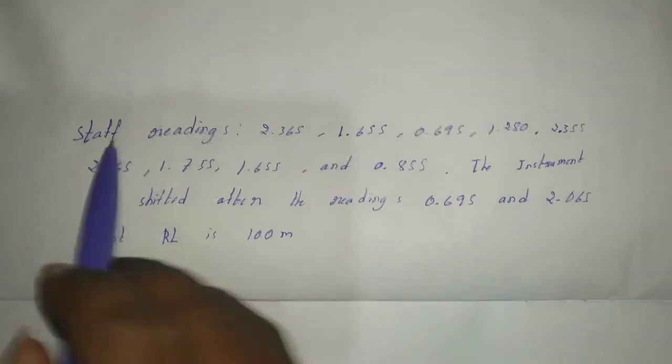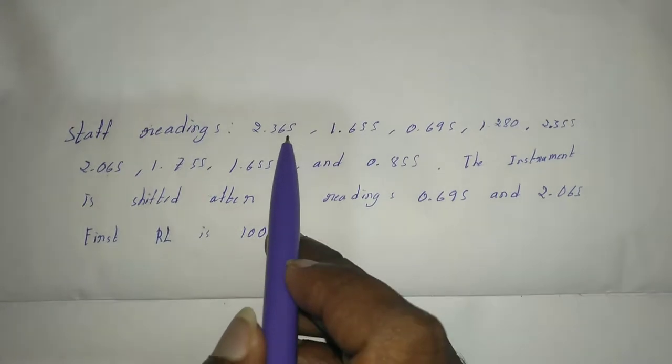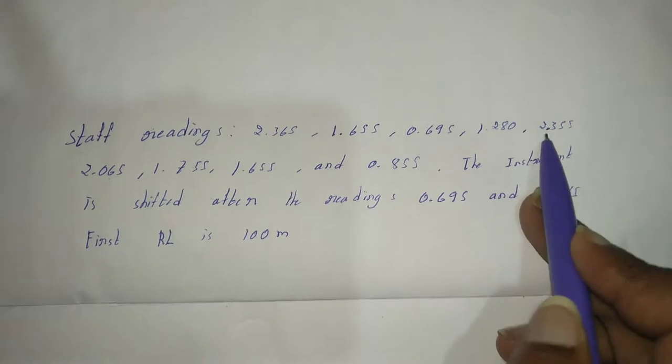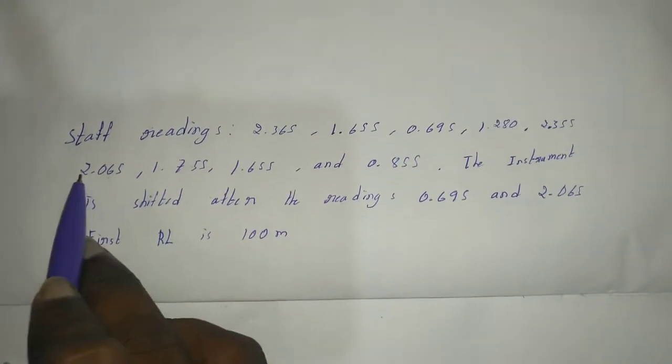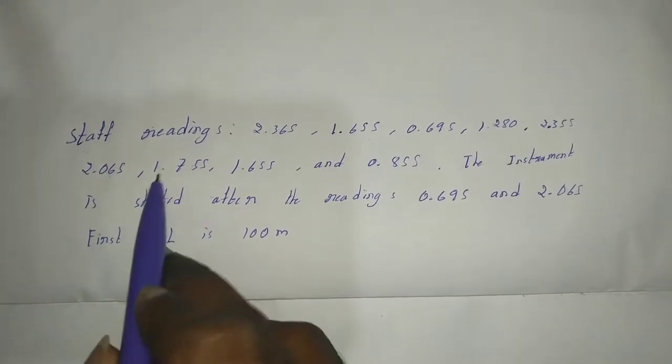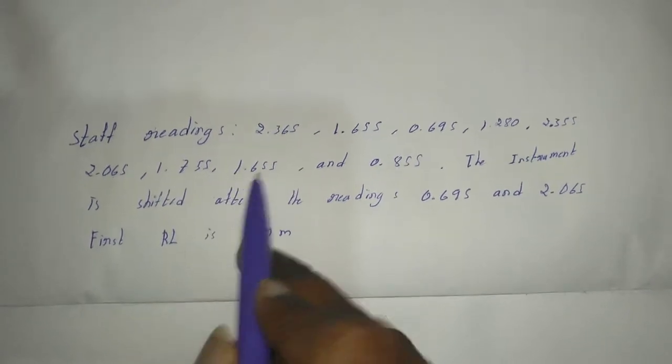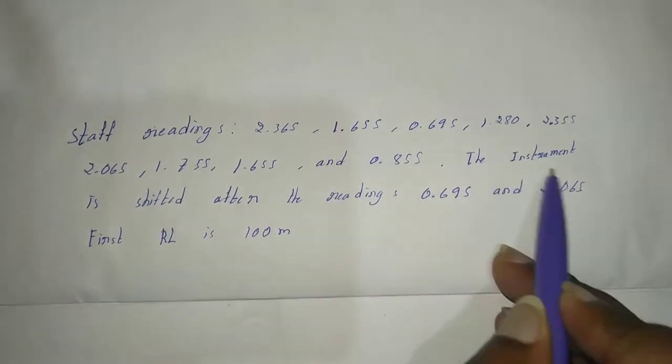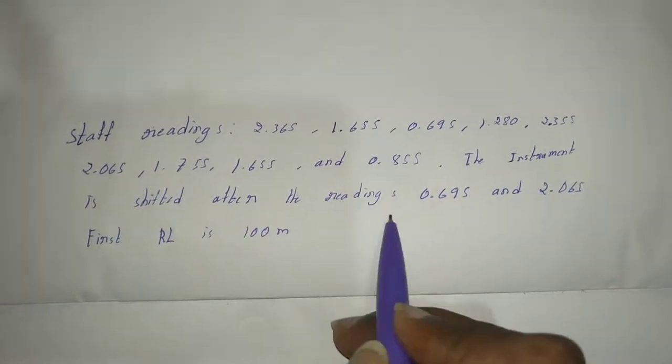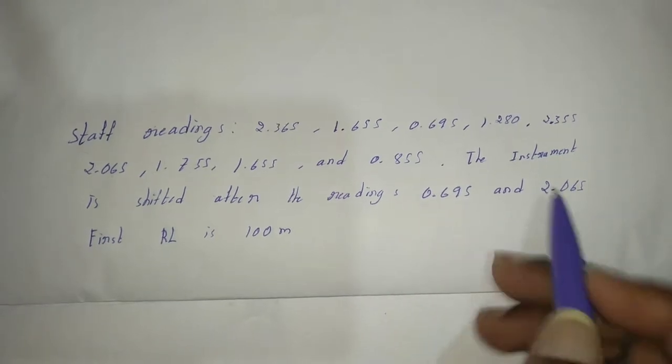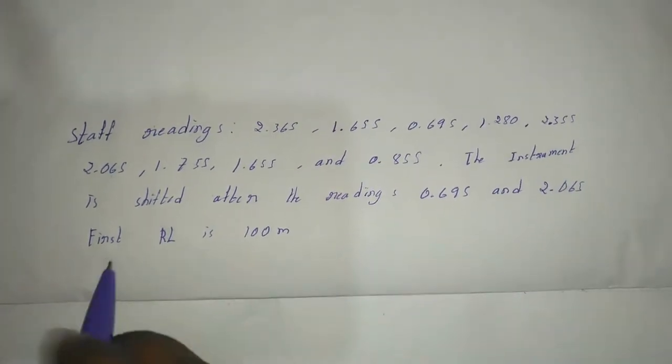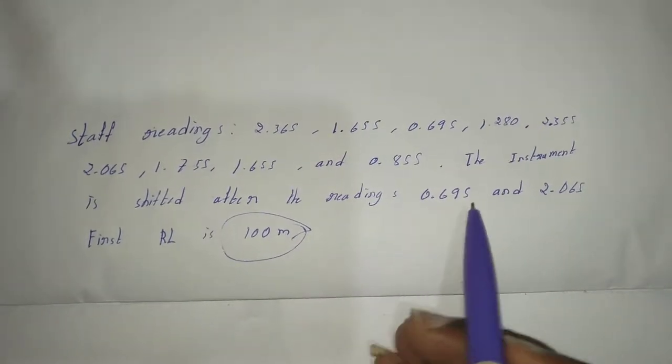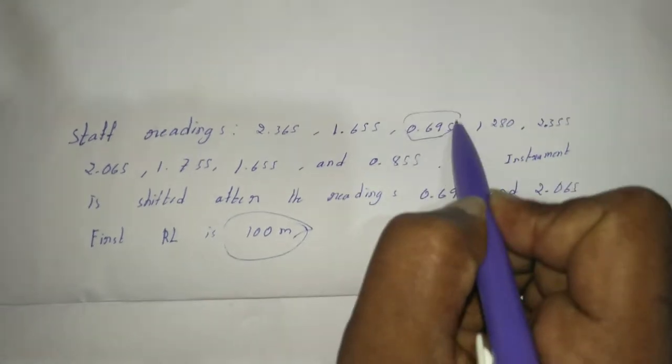There are our readings, staff readings: 2.365, 1.655, 0.695, 1.280, 2.355, 2.065, 1.755, 1.655, and 0.555. The instrument is shifted after the readings 0.695 and 2.065.